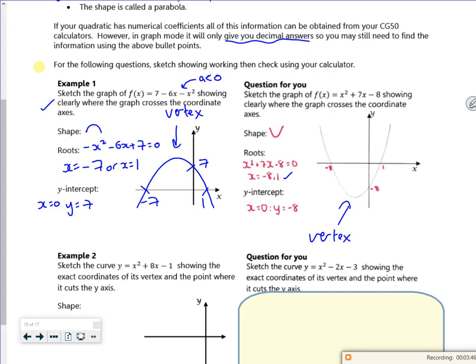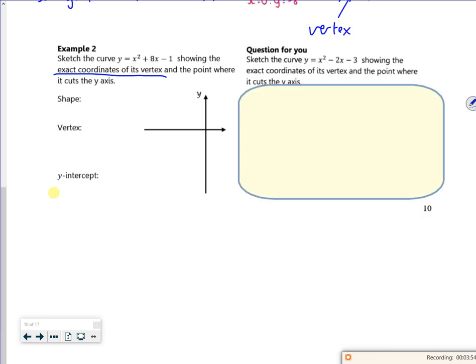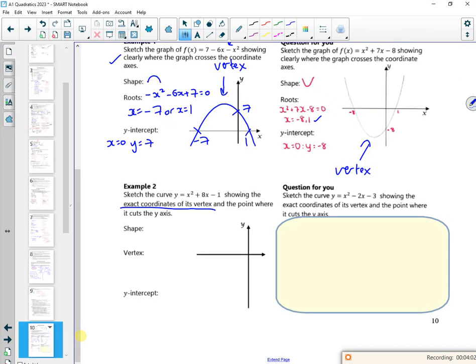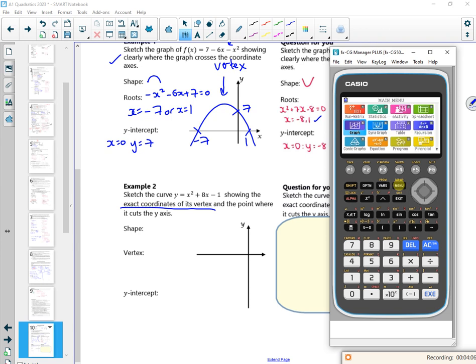Let's go back to Example 2. It says it wants the exact coordinates of the vertex. That's telling you be careful using the calculator. I can cheat and do this on my calculator, but if it's a decimal I need to do it properly.